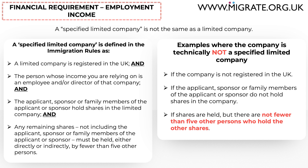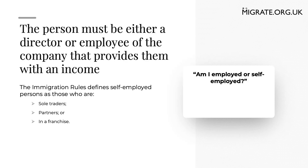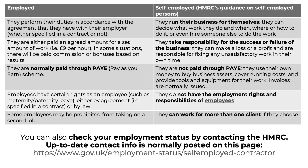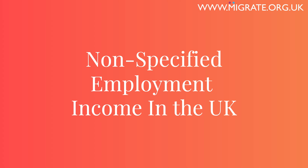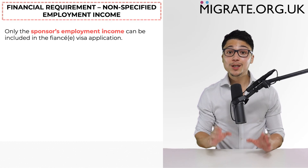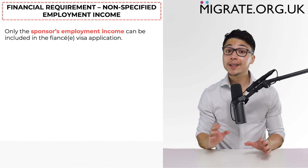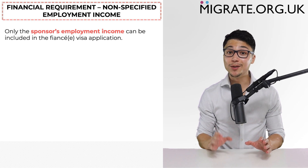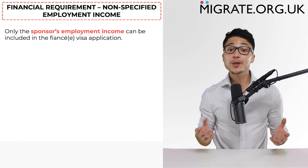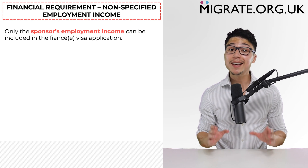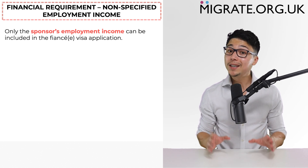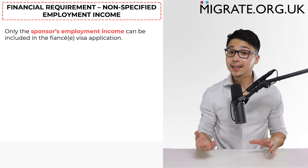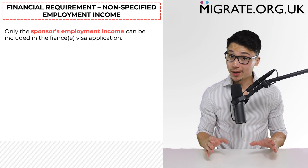If you're still not sure whether the employing company is a specified limited company, we break this down in greater detail in part two of our three-part common mistakes video series on our YouTube channel. We will now discuss non-specified limited company employment income in the UK. Only the sponsor's employment income — and not the applicant's — can be included in the fiancé visa application, because the immigration rules state that the applicant's employment income can only be included if they are aged 18 or over, working legally, and in the UK.